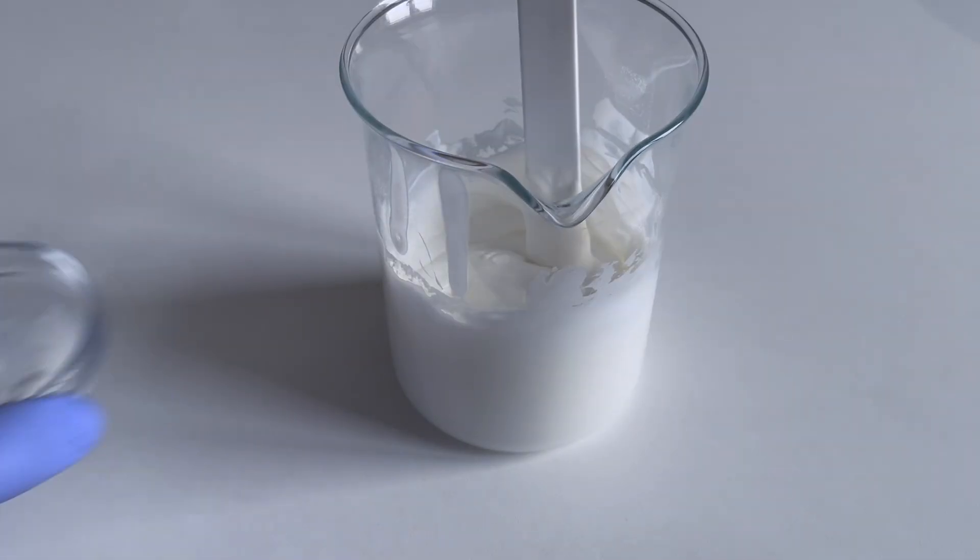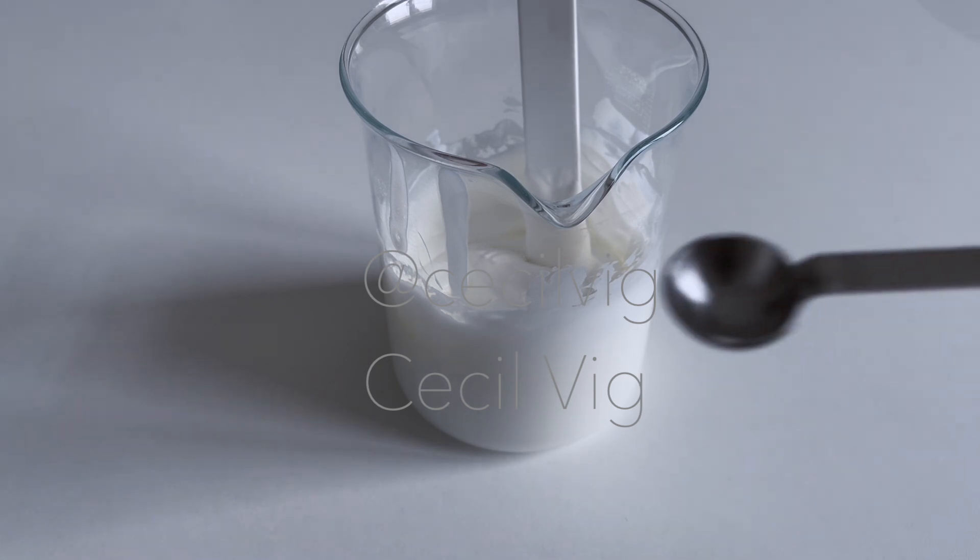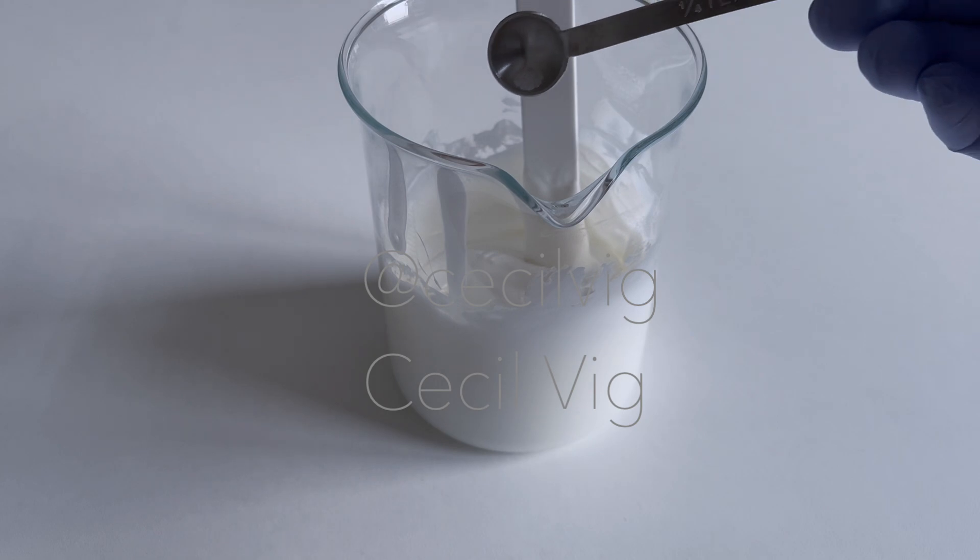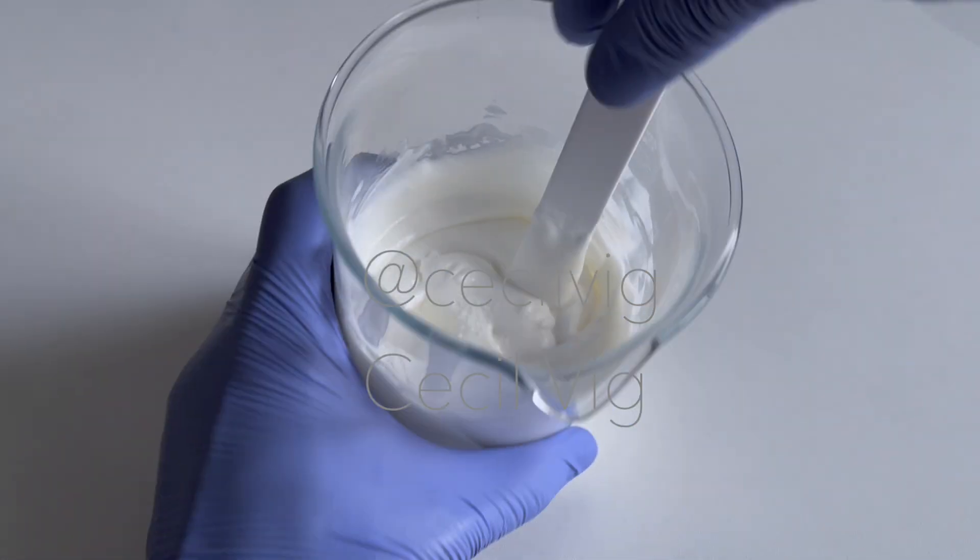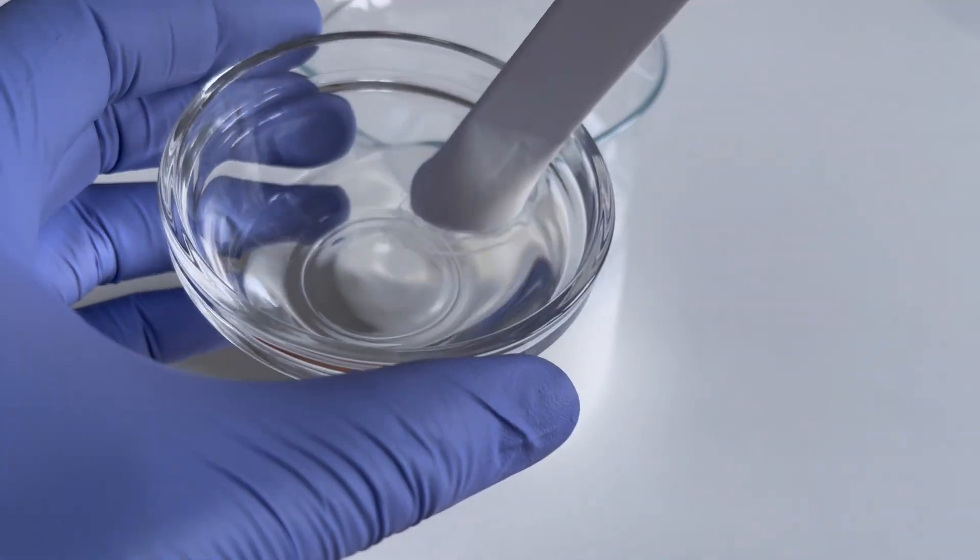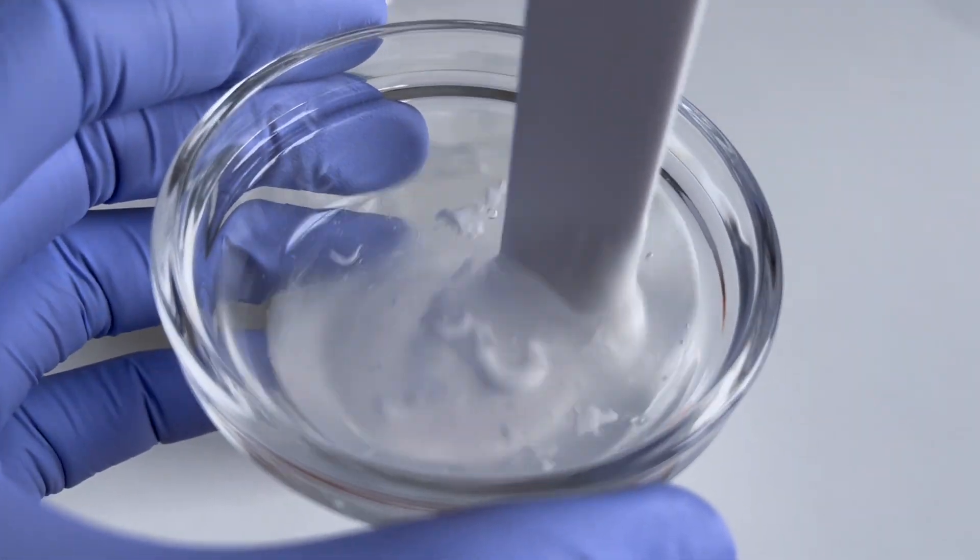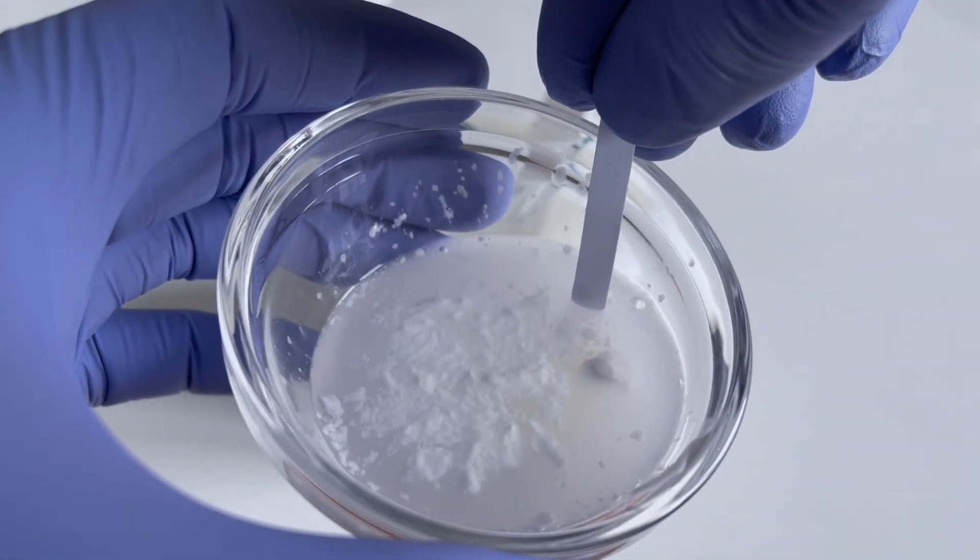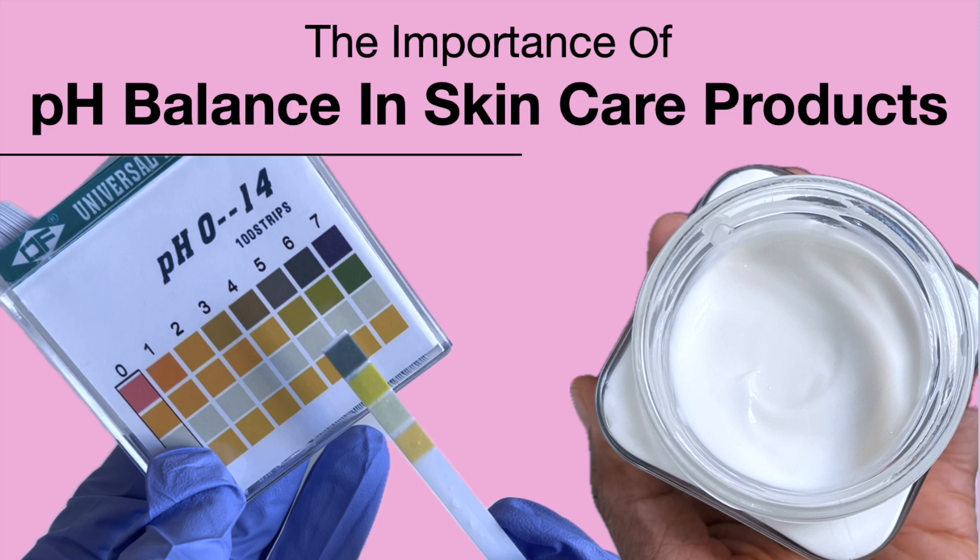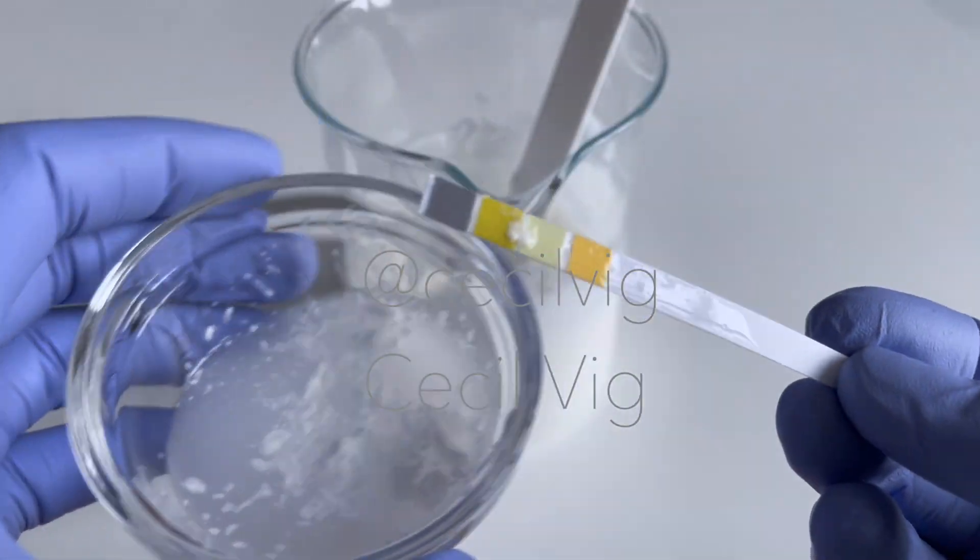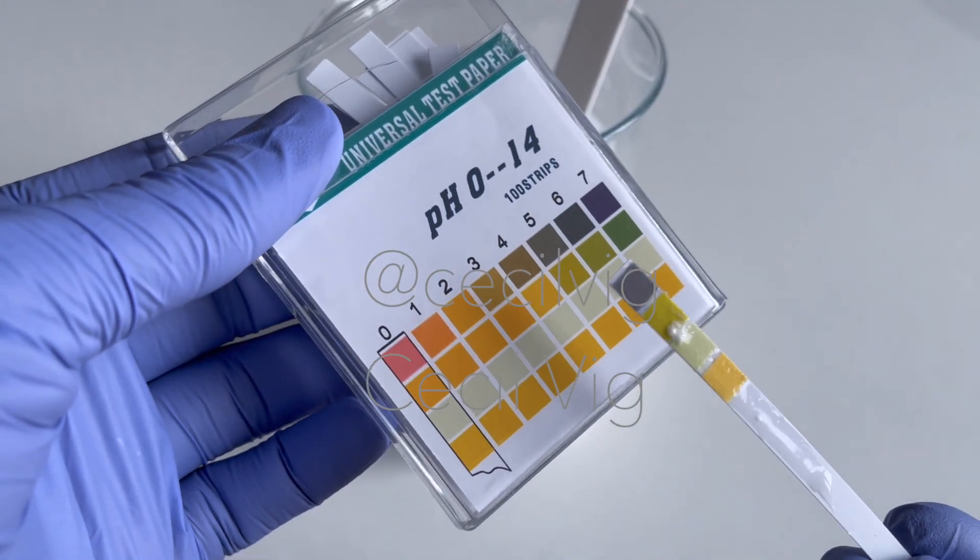To lower the pH value from 5.5 to 5, I add 0.10g of citric acid to the emulsion. Mix well, then test the pH value again. As you can see, we now have a pH value of 5, which is perfect.